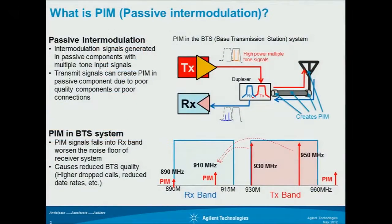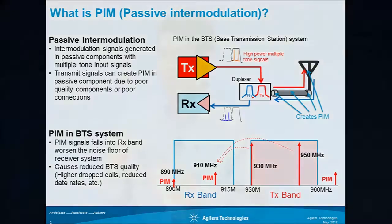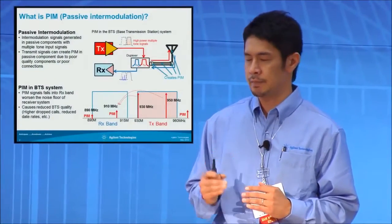This figure shows a model of the BDS base station — base transmission station — system. Intermodulation signals can be generated in passive devices like cables, connectors, or antennas — every passive device. And if the PIM, passive intermodulation, falls into the RX path of the base station system, it can be a noise for the RX path. So it is a problem.